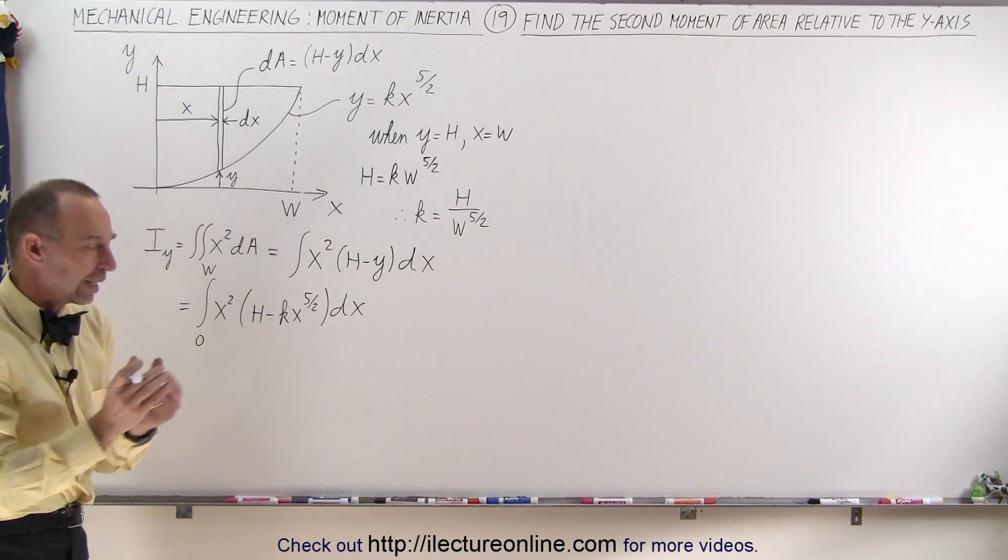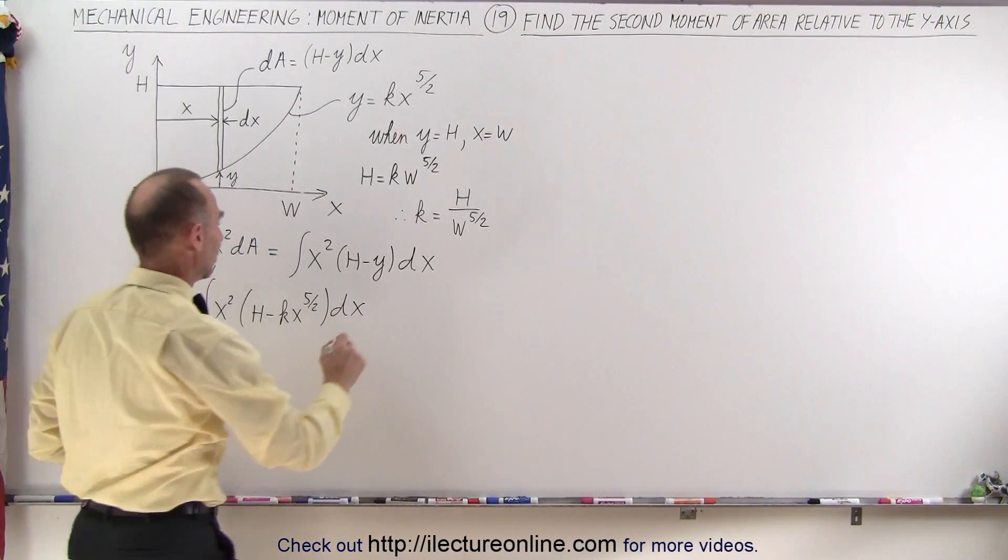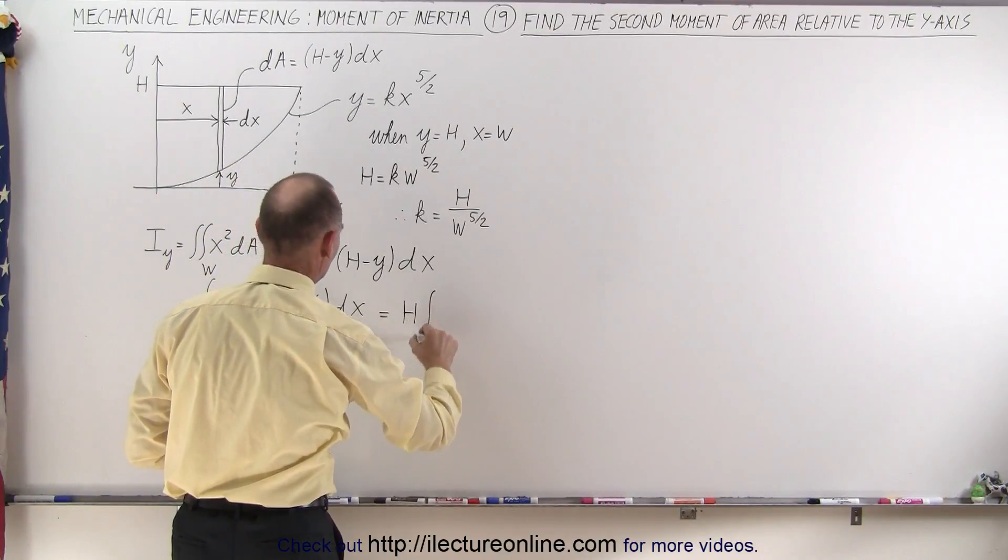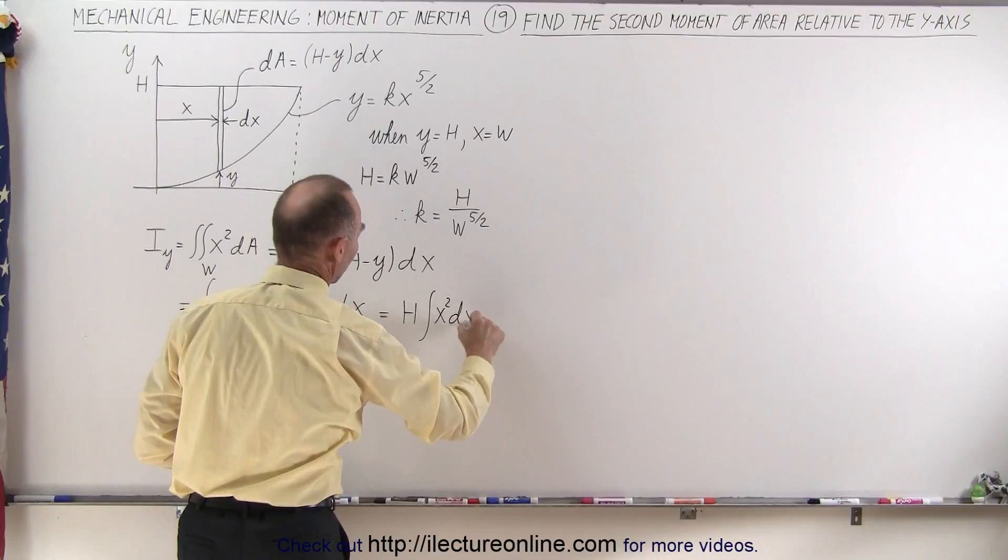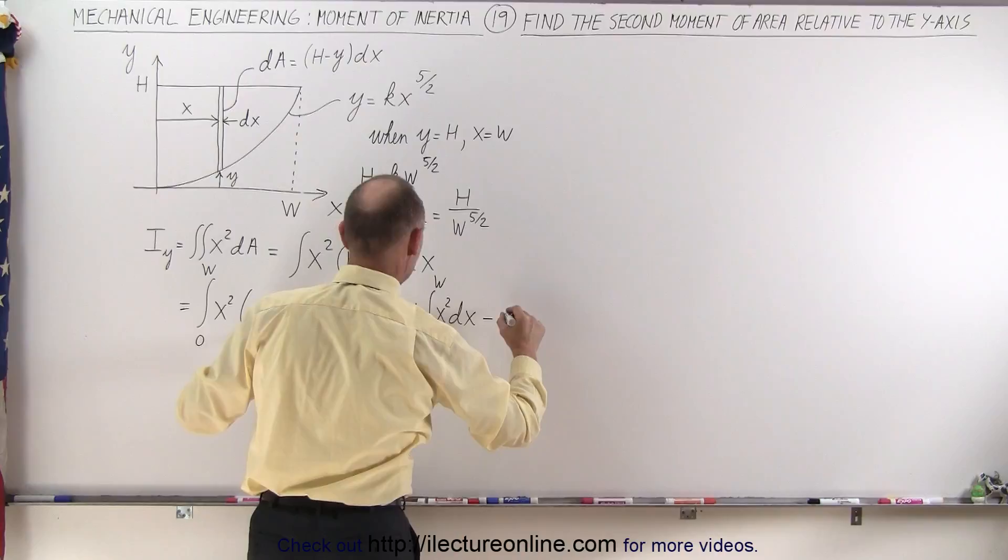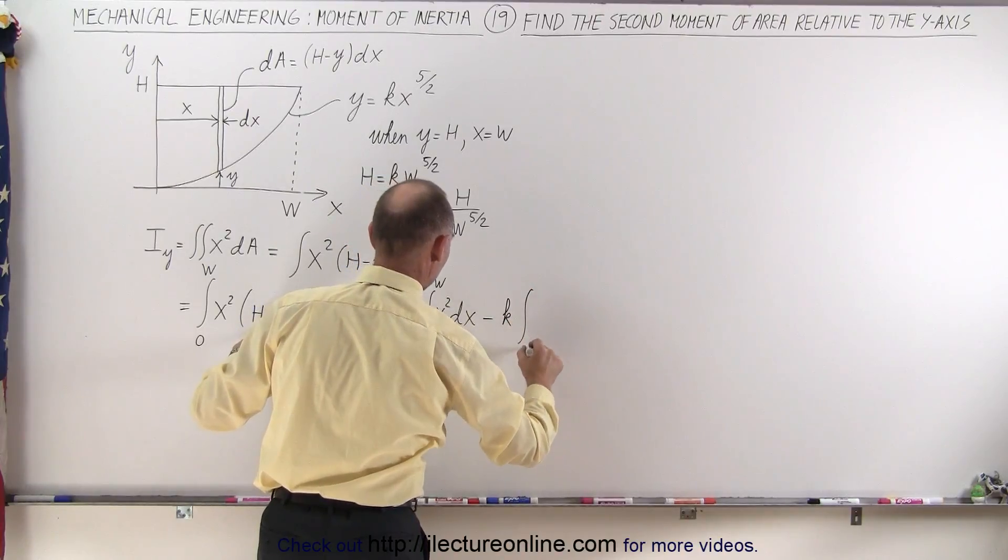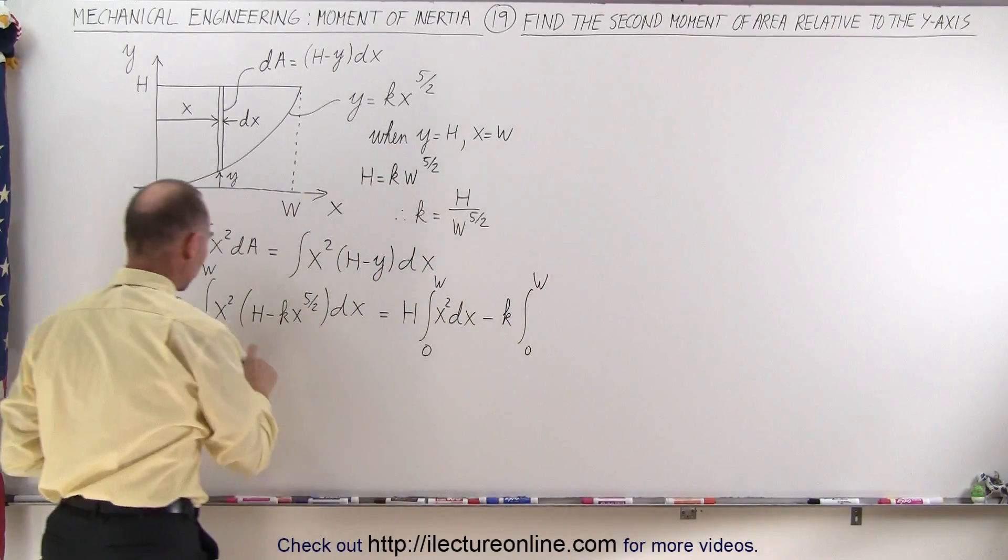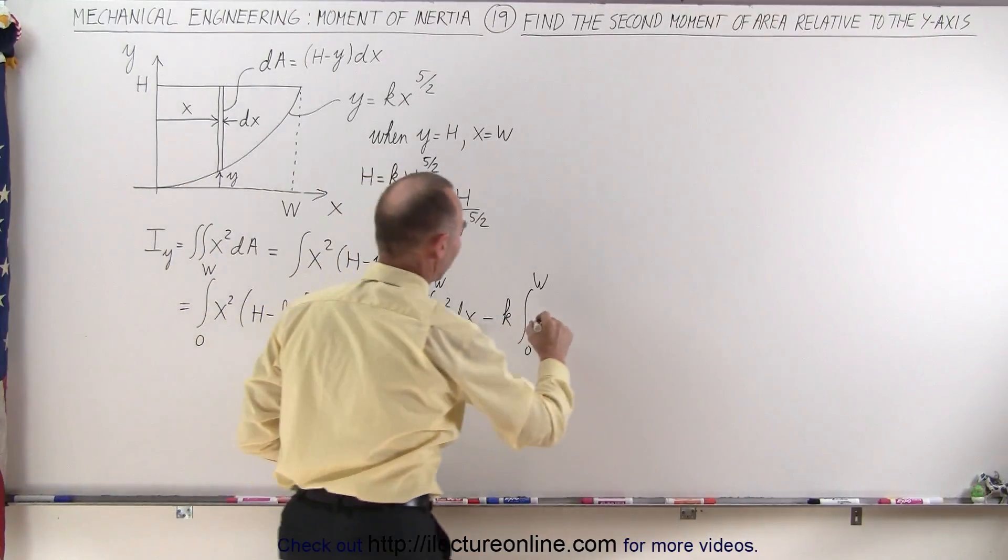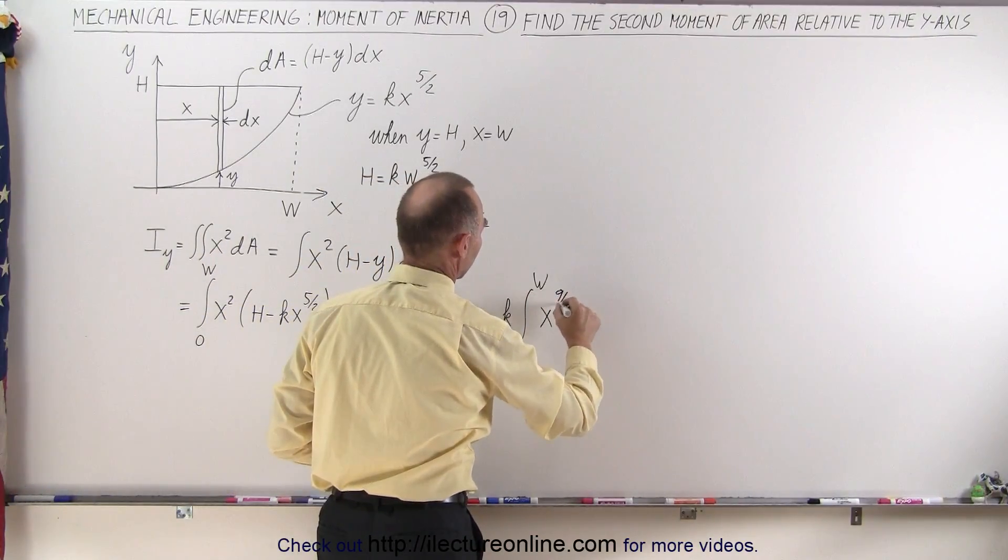Which means we can now separate that into two separate integrals. So this becomes equal to, we can factor out an h, h times the integral of x squared dx from 0 to w, and then minus k times the integral from 0 to w, and we multiply x squared times x to the 5 halves, that would become x to the 9 halves dx.